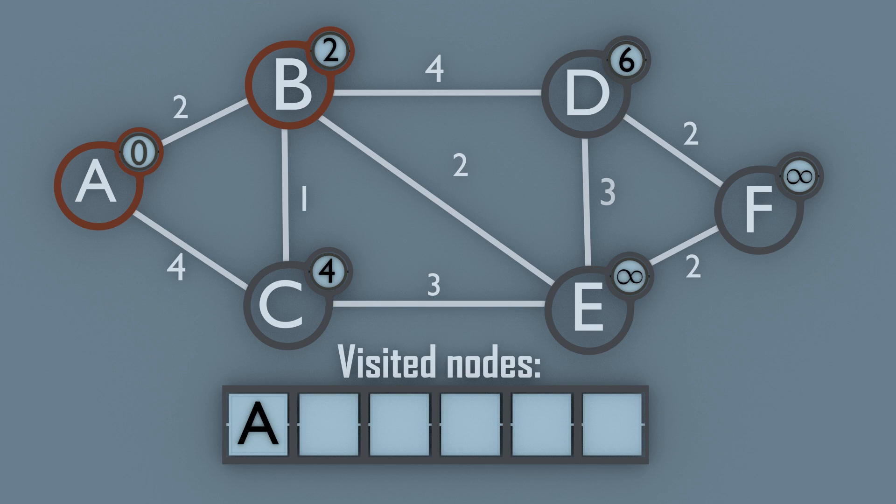Then we compare the weight of node E to the distance and update node E's weight to 4. Finally we compare the distance to node C to the weight of node C. Because the weight 4 is greater than the distance 3, we update node C's weight to 3.